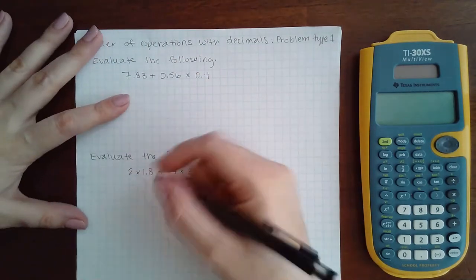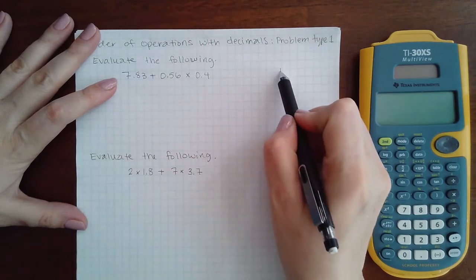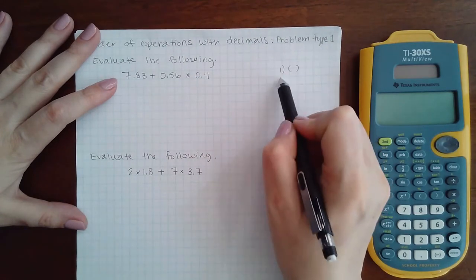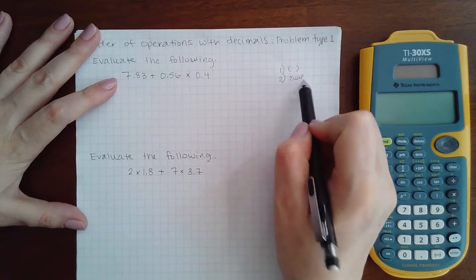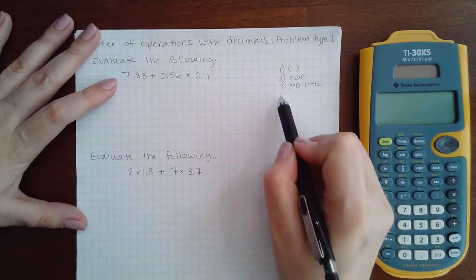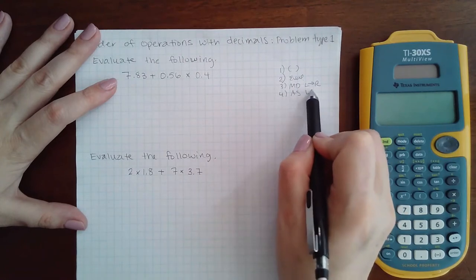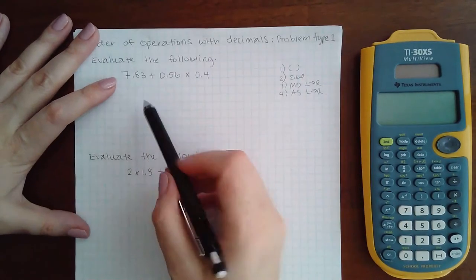For my order of operations we've got four steps: parentheses, then you've got evaluate, then you've got multiply and divide as long as you go left to right, and the last step, add and subtract as long as you go left to right.